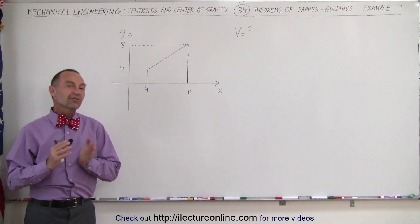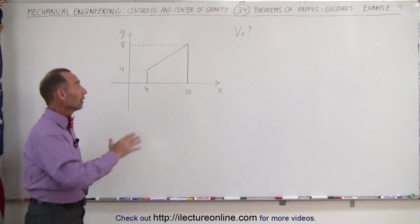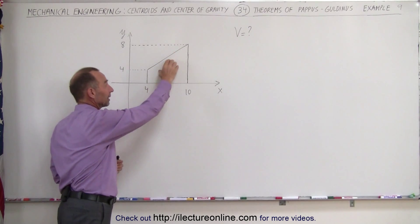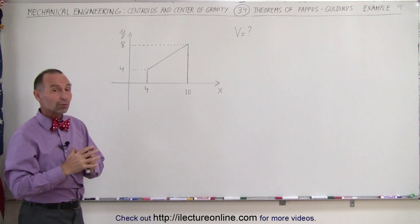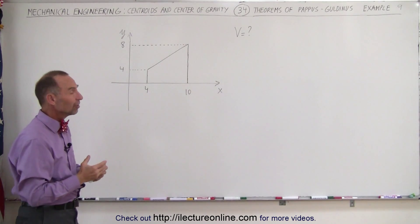Welcome to our lecture online. Here's an example where when we revolve an object or a shape like this about the x-axis, we're going to get an object for which we're trying to find the volume. But in this case, we're going to need to chop it up into two separate pieces.